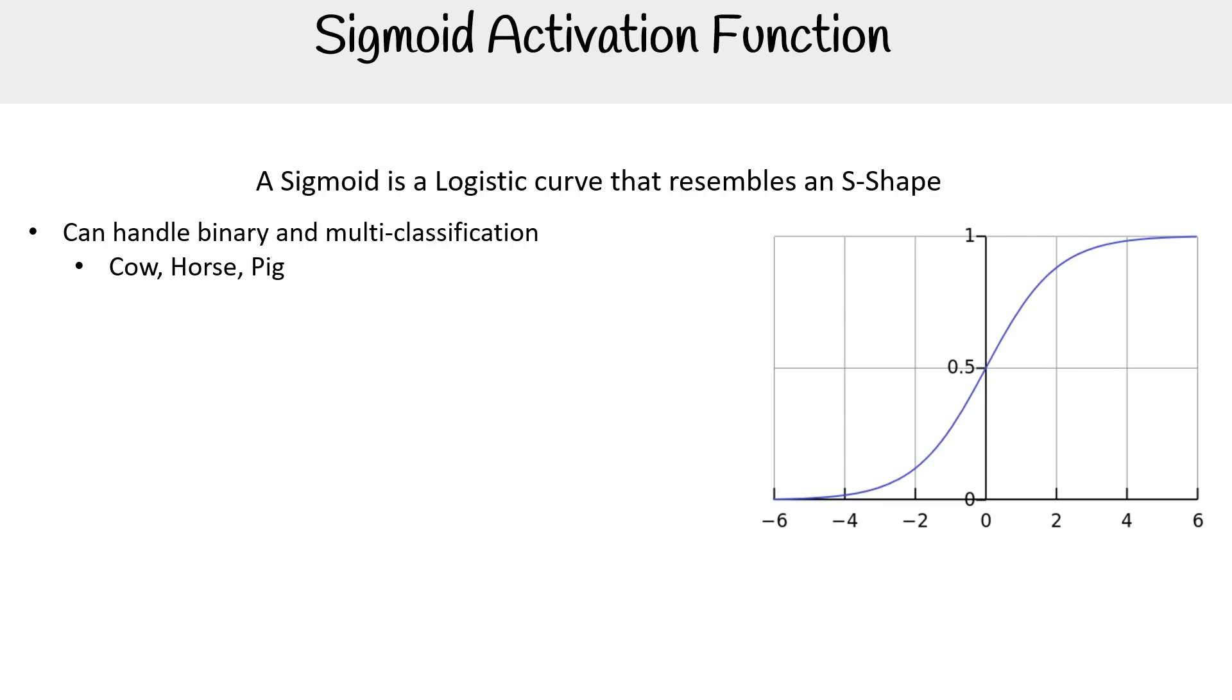It can handle binary and multi-classification - think cow, horse, pig. We can now stack layers. It has a range between zero and one and tends to bring the activations to either side of the curve with clear distinctions on prediction.